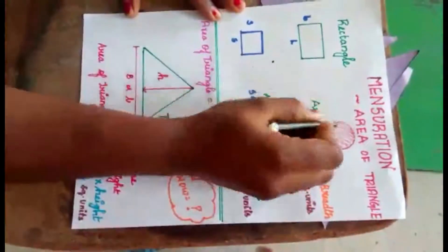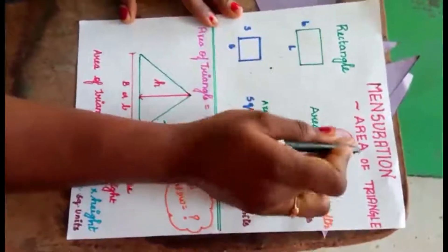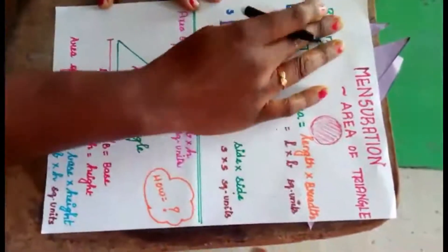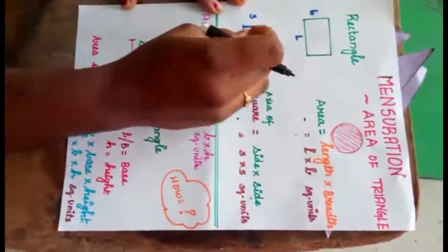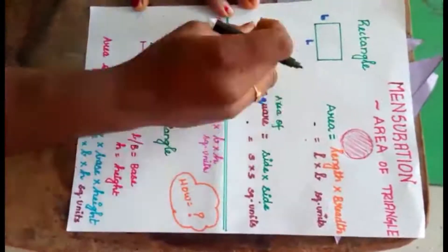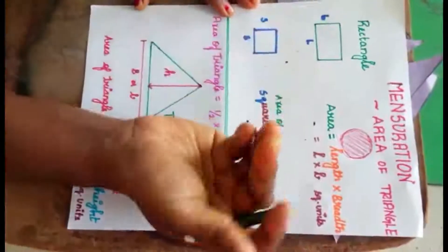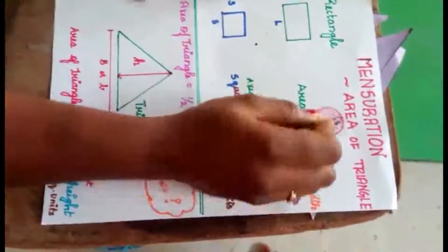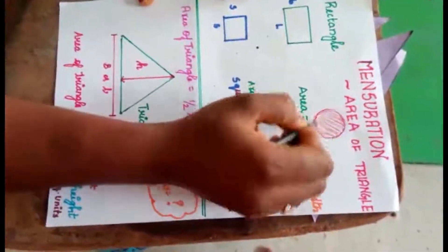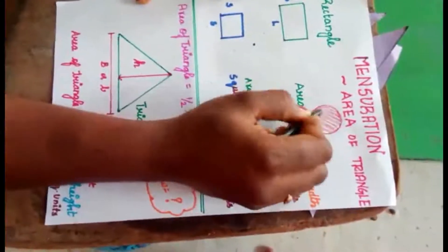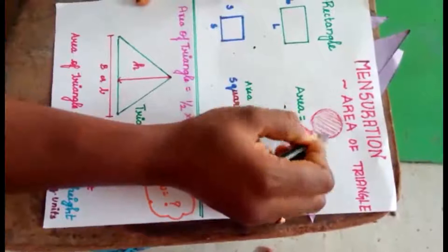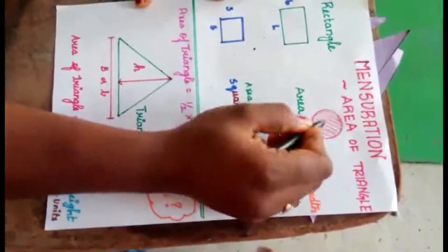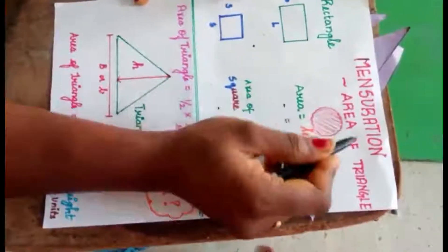Before going into area of a triangle, let us see what is area, area of rectangle, and area of square as a recap. Area is nothing but the space or the region which is occupied by any shape or a thing — we call it area.